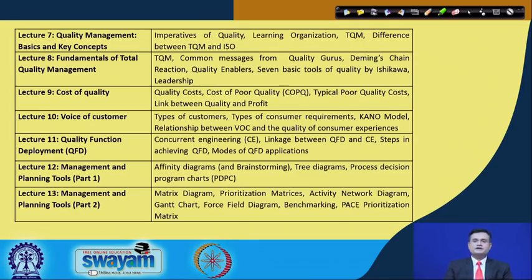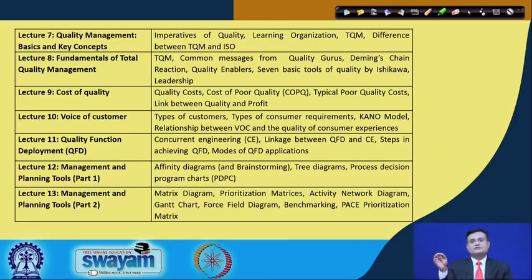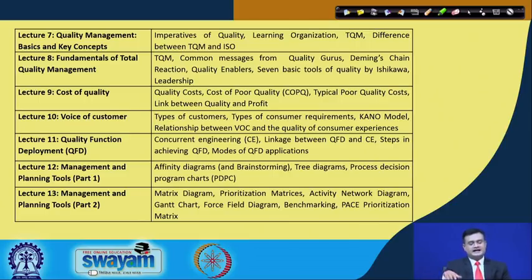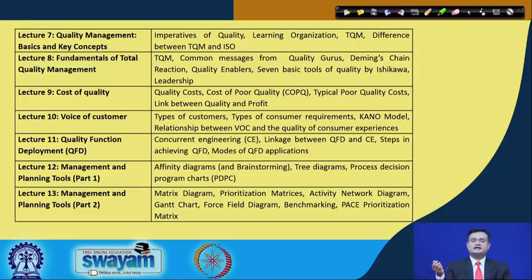In week 2, lecture 7 covered quality management basics and key concepts. You cannot implement any continuous improvement program like Six Sigma unless you have a proper organizational culture where such initiatives can flourish. We saw quality management principles and TQM, and in lecture 8 the fundamentals of TQM — the views of quality gurus like Crosby, Juran, Ishikawa, Feigenbaum, and others. Lecture 9 was devoted to cost of quality: cost of prevention, appraisal, internal failure, and external failure cost.